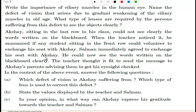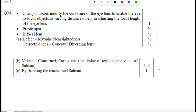Let's discuss question number 24: write the importance of ciliary muscles in the human eye, name the defect of vision that arises due to gradual weakening of the ciliary muscle in old age — that is presbyopia — and what type of lenses are required by the person suffering from this defect to see objects clearly — that is bifocal. The answer: ciliary muscles modify the curvature of the eye lens to enable the eye to focus objects at varying distances, or help in adjusting the focal length of the eye lens.